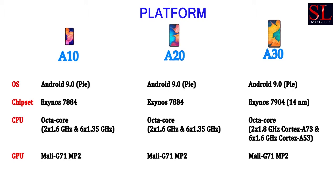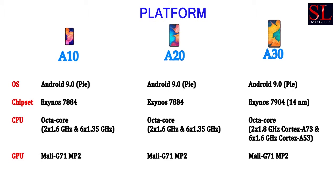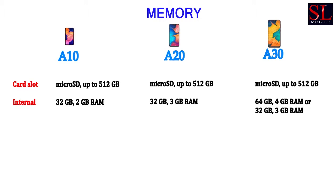This is the A3 and A20 platform. The A30 runs Android 9.0 with the Exynos 7904 chipset. The GPU is Mali G1 MP2. The phone has a 512 GPU.